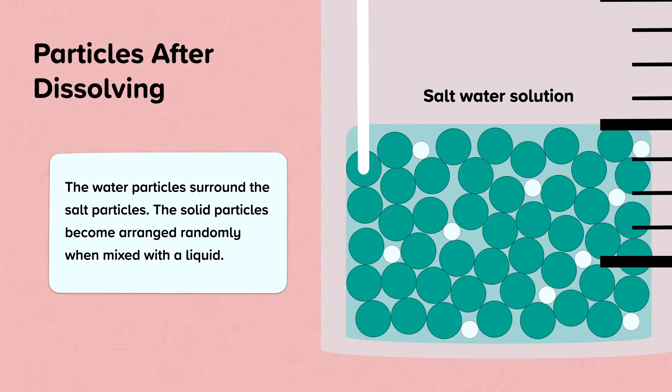The particles are free to move around. Note that the solution is a mixture, as the particles are not chemically bonded together. If we added more solute to a solution the mass would increase, because we have added more particles to the solution. The volume however remains the same. Once there is no more space for salt in the solution, no more will dissolve. When a solution reaches this point we call it a saturated solution.